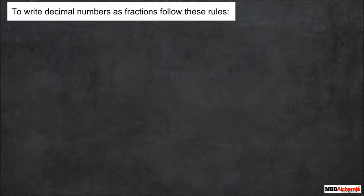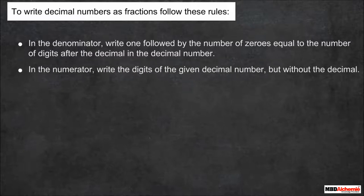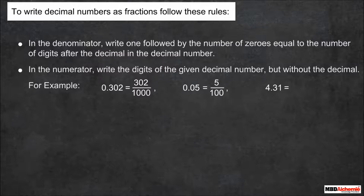To write decimal numbers as fractions, follow these rules: (1) In the denominator, write 1 followed by the number of zeros equal to the number of digits after the decimal point. (2) In the numerator, write the digits of the given decimal number without the decimal point. For example, 0.302 = 302/1000, 0.05 = 5/100, and 4.31 = 431/100.